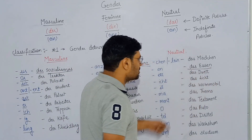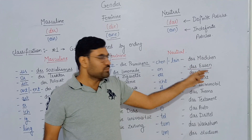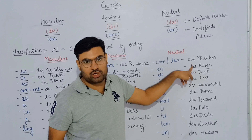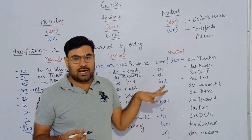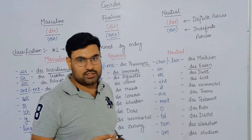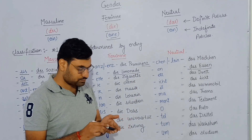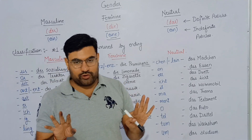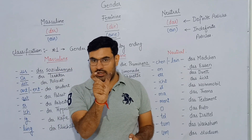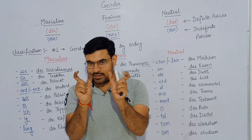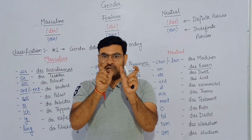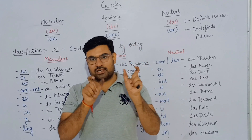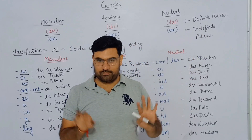'Die Limonade' — lemonade is feminine in gender, so we add 'die' in front, which denotes that this noun is feminine. For 'das Essen,' meaning 'the food,' we write 'das' before 'Essen,' which means this word is neutral in gender. So: 'der' = masculine, 'die' = feminine, 'das' = neutral.